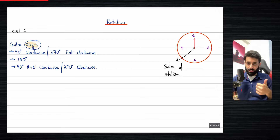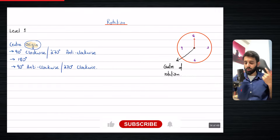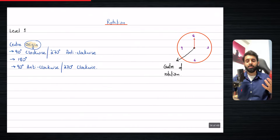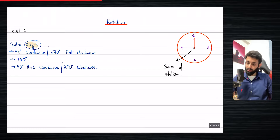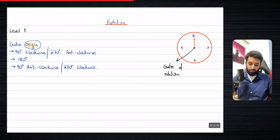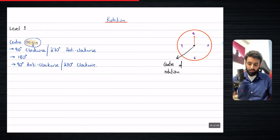We'll do 90 degree clockwise, which is the same thing as 270 degree anticlockwise. We'll do 180 degrees — with 180 degrees we don't specify the direction, because it's understood that whether you rotate it clockwise or anticlockwise, it remains the same. And then we will do 90 degree anticlockwise, which is the same thing as 270 degree clockwise.